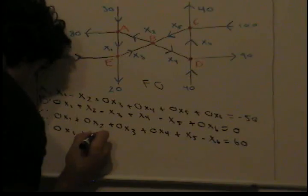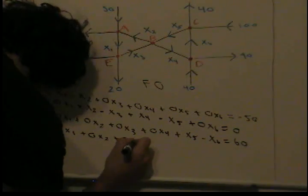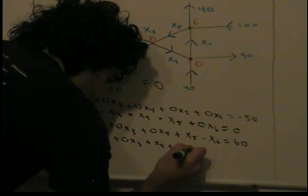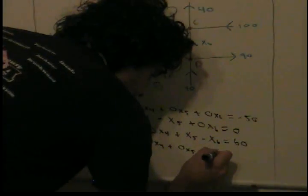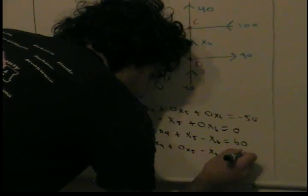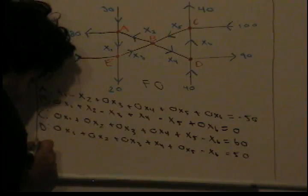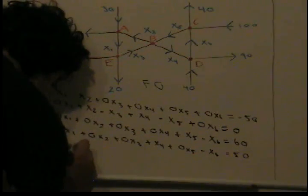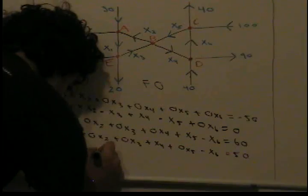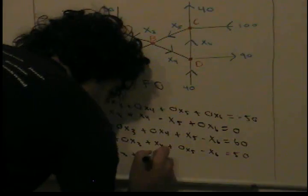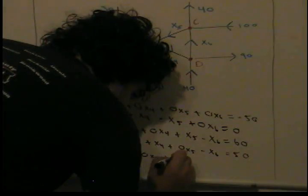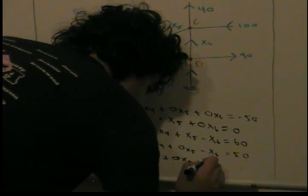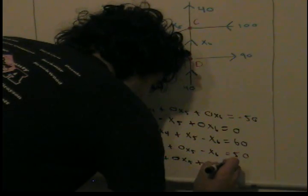So for node D we had 0x1 plus 0x2 plus 0x3 plus x4 plus 0x5 minus x5 minus x6 equals 50. And finally for node E we have x1 plus 0x2 minus x3 plus 0x4 plus 0x5 plus 0x6 equals negative 40.